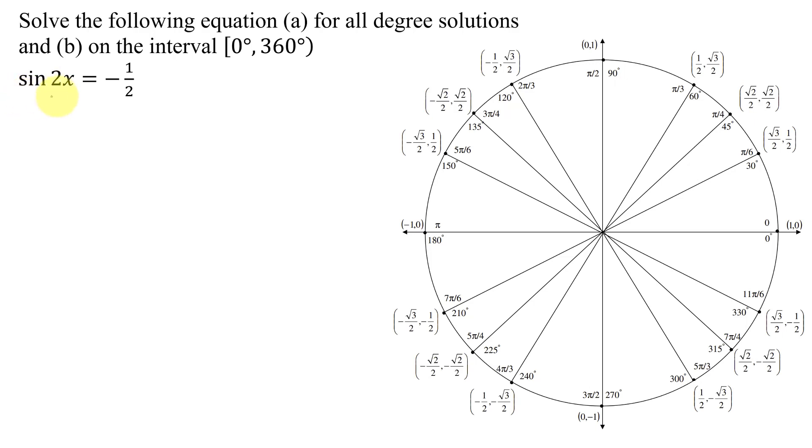Since the sine of 2x is negative a half, that means I'm looking for points here on my unit circle whose y coordinate is negative a half. That means that they have to be below the x-axis, so going around, here's one angle where the sine is equal to negative a half, the y coordinate is negative a half, and the other one is over here.